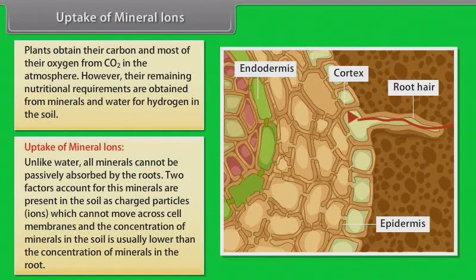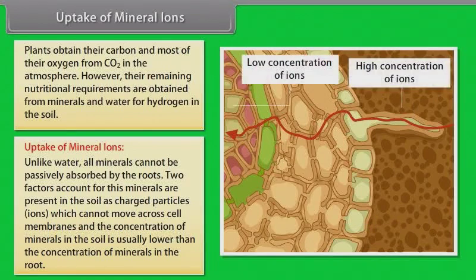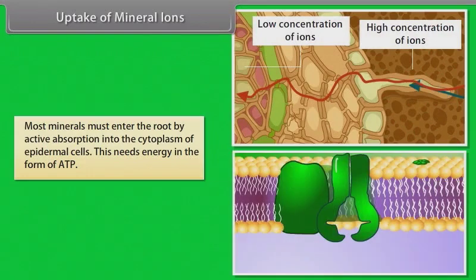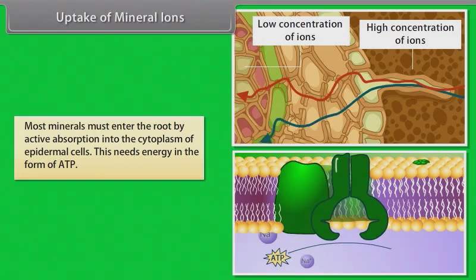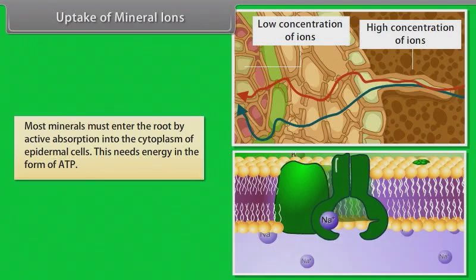Unlike water, all minerals cannot be passively absorbed by the roots. Two factors account for this: minerals are present in the soil as charged particles or ions, which cannot move across cell membranes; and the concentration of minerals in the soil is usually lower than the concentration of minerals in the root. Therefore, most minerals must enter the root by active absorption into the cytoplasm of epidermal cells. This needs energy in the form of ATP.